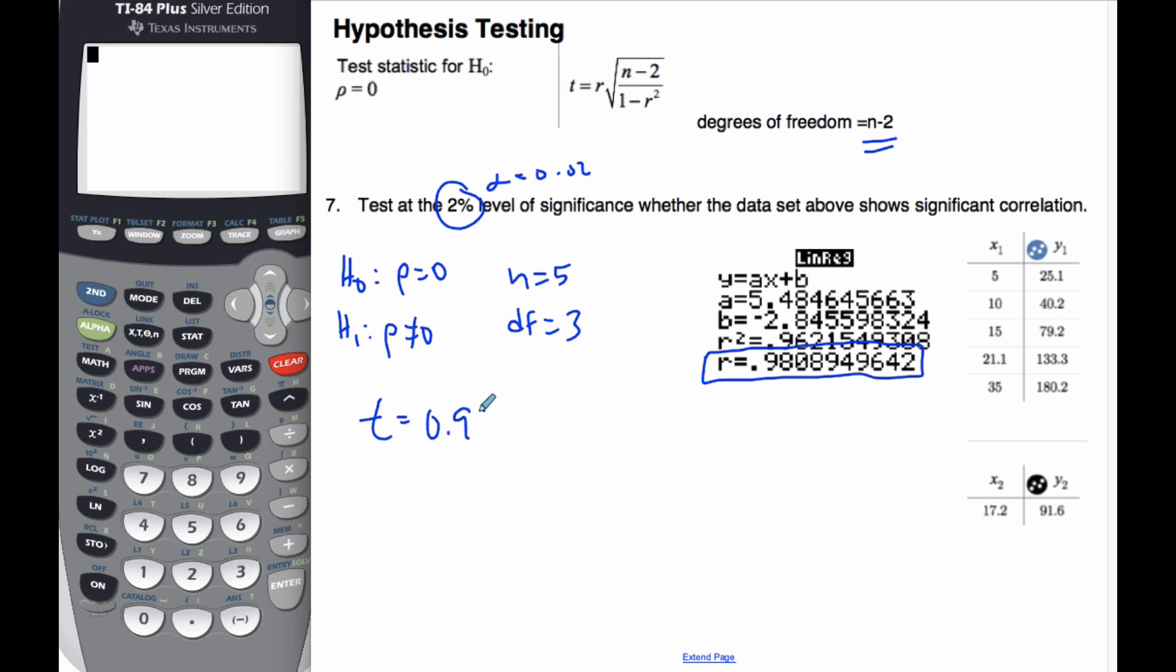0.98089 and so on, times the square root of N, which is 5, minus 2, over 1 minus this R value 0.98089, squared.